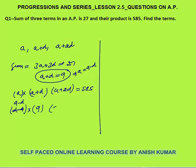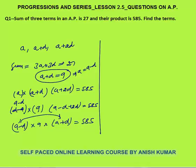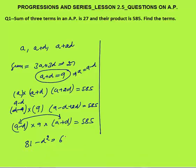Substituting, we get (9−d) times 9 times (9+d) equals 585. Using the identity (a+b)(a−b) = a²−b², this gives 81 minus d² equals 585 divided by 9, which is 65. So d² equals 81 minus 65, which is 16.